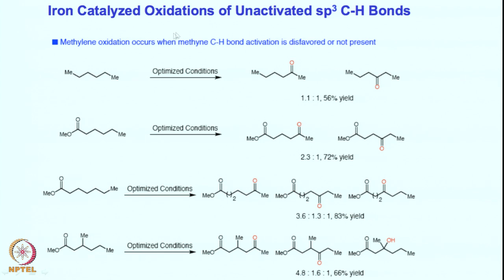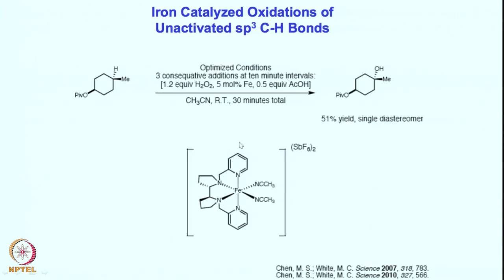In iron-catalyzed oxidations of unactivated sp3 C-H bonds we will see many different types. For example, this substrate has primary sp3 C-H bonds and four secondary sp3 C-H bonds. If reacted with the iron oxo intermediate — the oxo carboxylate-bridged intermediate formed from the ligand-iron complex with hydrogen peroxide and acetic acid — this is the species facilitating hydroxylation chemistry.